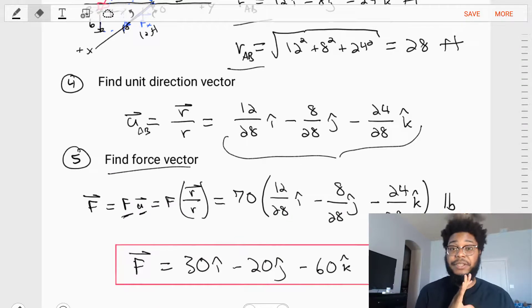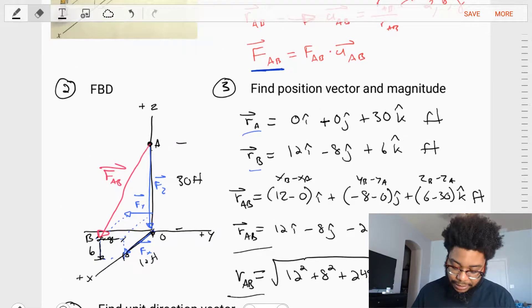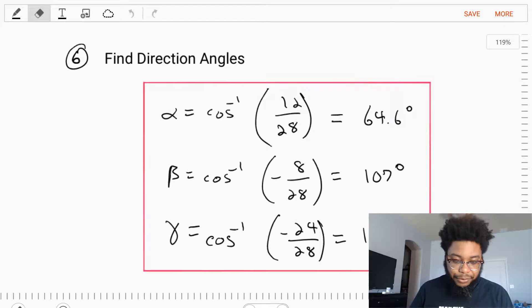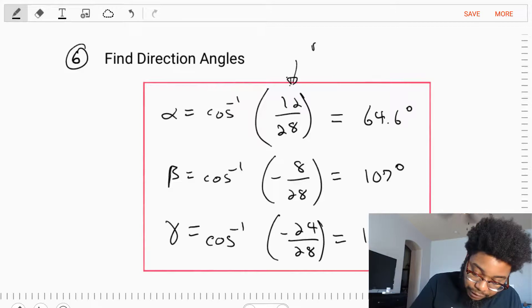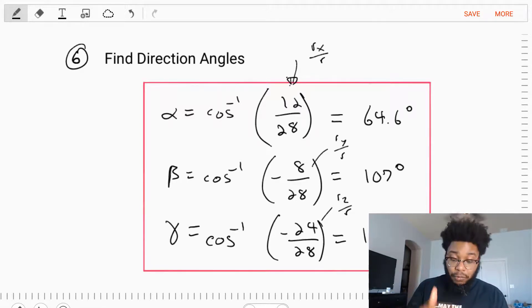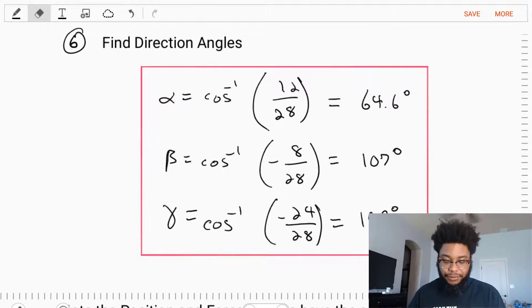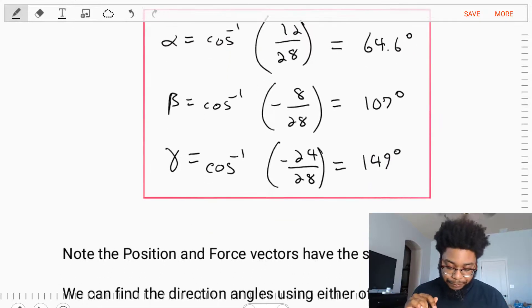Now let's do part B. We also need to find the direction angles for this problem. Well, the unit direction vector carries all of the direction. So let's use that to find the angles. Our direction angles are equal to the ratio terms rx over r, ry over r, and rz over r. Where this is the rx over r term, ry over r term, and the rz over r term. The components over the lengths for that unit direction. So we plug those in, rearrange solve, we find alpha is equal to 64.6 degrees, beta is equal to 107, and gamma is equal to 149 degrees.